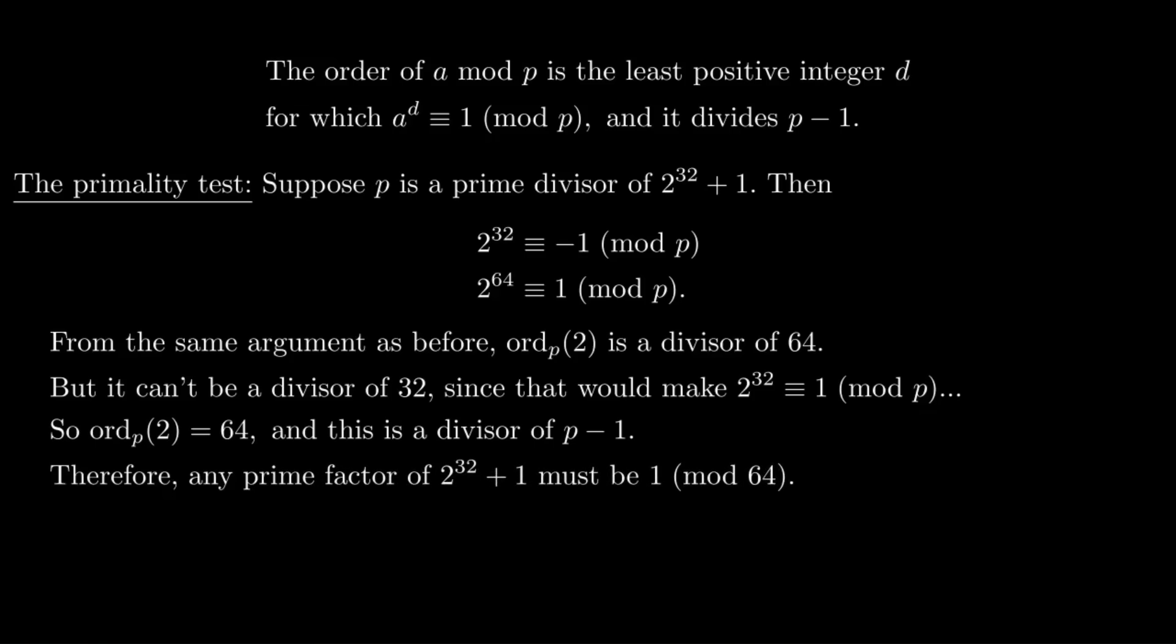So that narrows down considerably the primes we have to test. So let's list out the first 10 numbers that are 1 mod 64. So we get this list. And first of all, we can get rid of the numbers that aren't prime in this list right away because we're only interested in prime factors. So that gets rid of 5 of the possibilities already. And then we just have to test these 5 numbers. And sure enough, the first 4 don't work. But the first one that does work is 641.